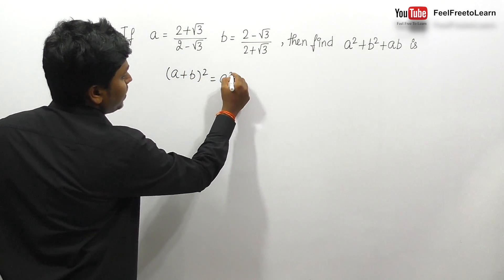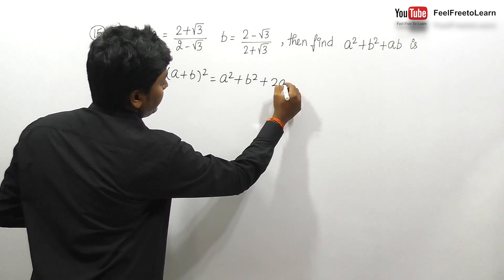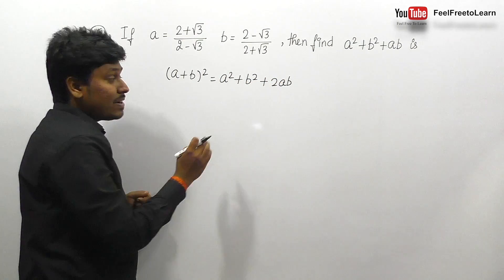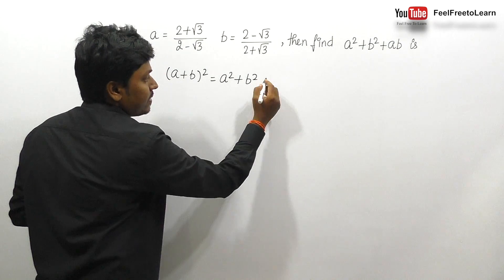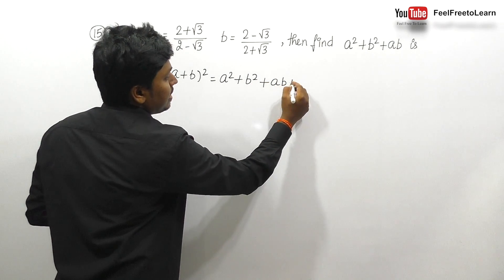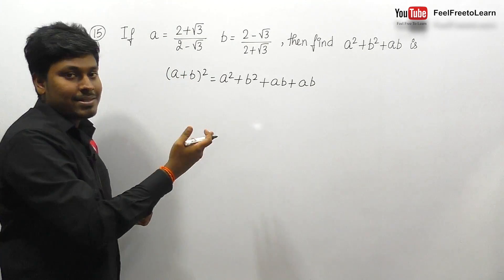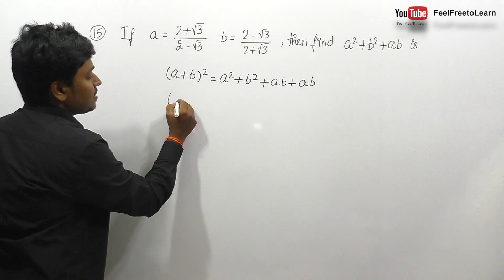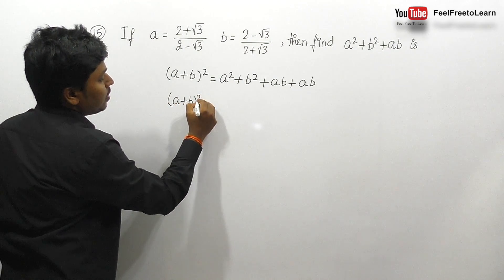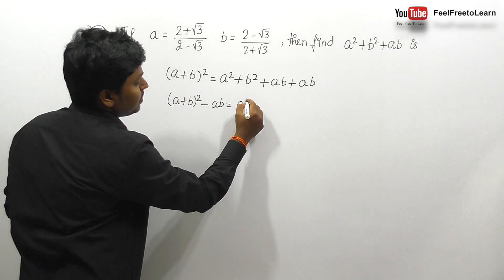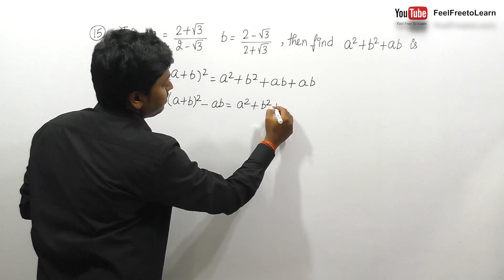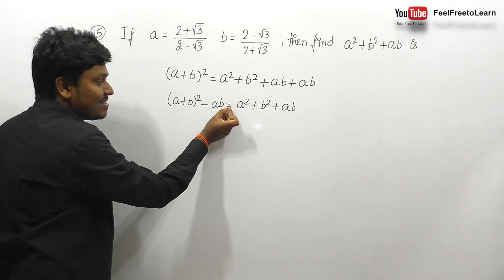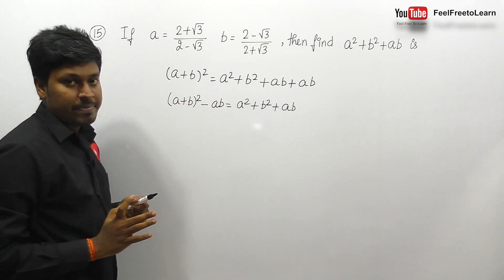(a+b)² equals a² + b² + 2ab. Since we only have ab in the expression, I will write 2ab as ab + ab, then bring one ab to the left-hand side. So (a+b)² - ab = a² + b² + ab.